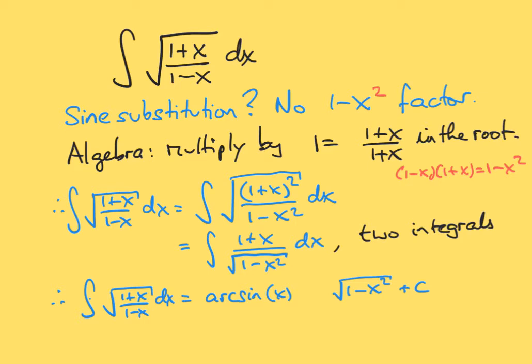The numerator already has a factor of 1 plus x in the root. So if we're multiplying by this, we're going to get in the numerator (1 plus x) all squared. So now we take the square root of this fraction. And that is equivalent to you take the square root of the numerator and you divide by the square root of the denominator.